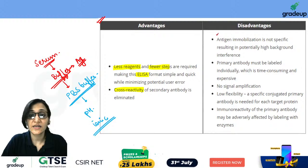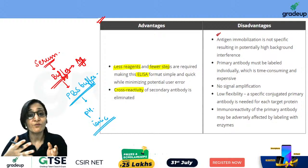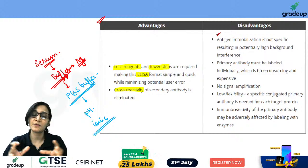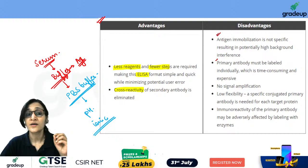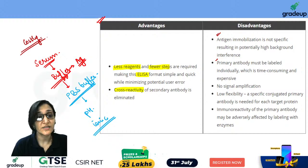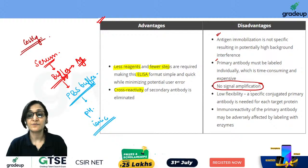The buffer used is PBS buffer — Phosphate Buffered Saline. PBS buffer is used because its pH and ionic concentration are similar to human blood, so the antigen remains safe. The disadvantages include: antigen immobilization is not specific, potentially causing high background interference. The primary antibody must be labeled individually, which is time consuming and expensive. Also, there is no signal amplification.